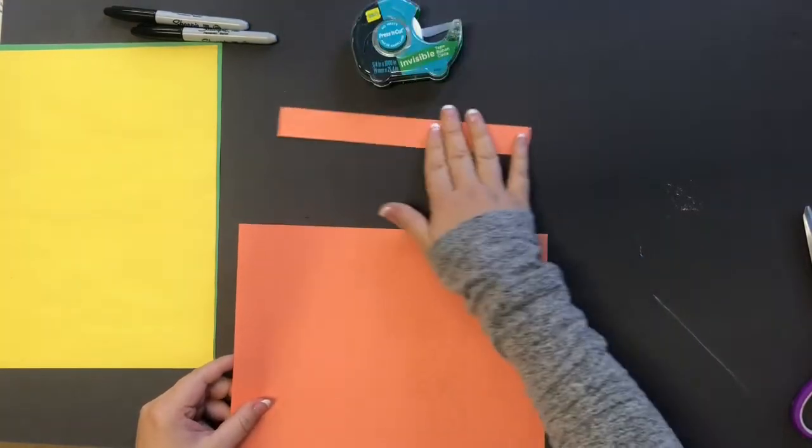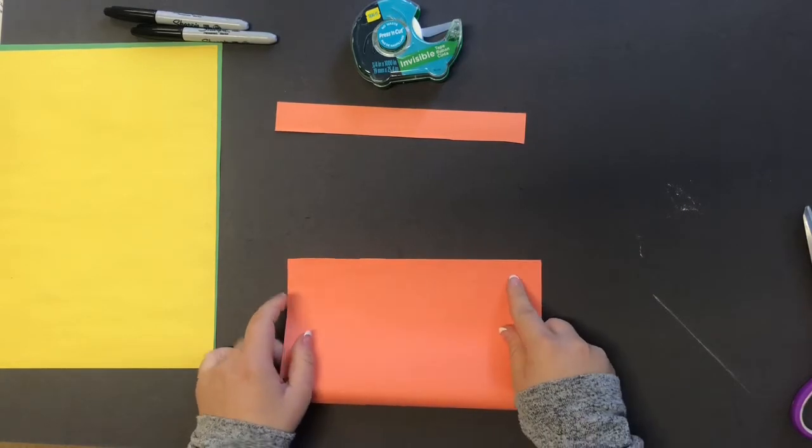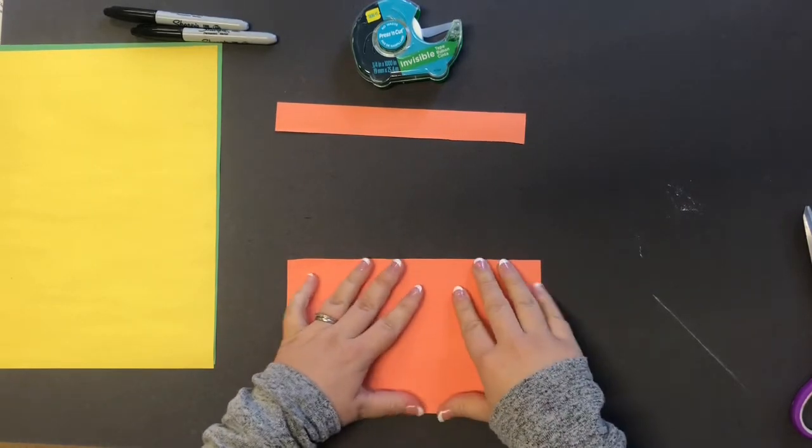So set that strip to the side, fold your paper this way, crease it down.